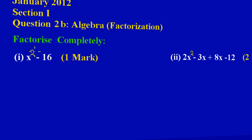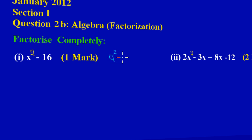If you notice, x is being squared and I have a minus a square term. What do I mean by a square term? We know that four times four will give us 16, so 16 is a square term. The general form of a difference of two squares is a squared minus b squared.